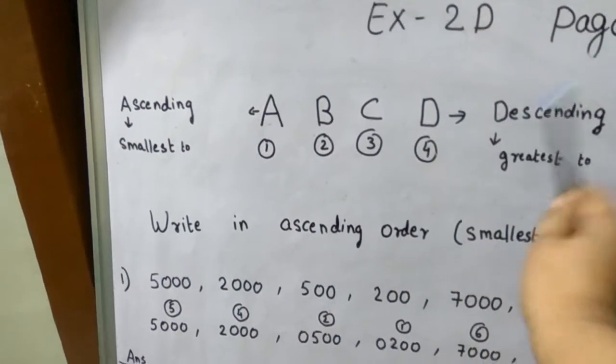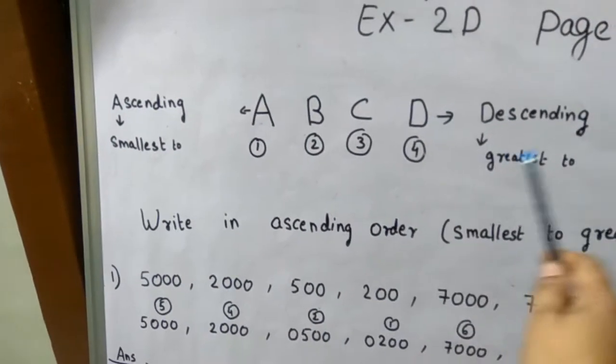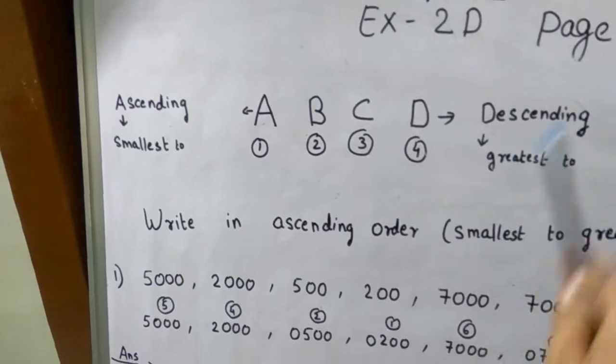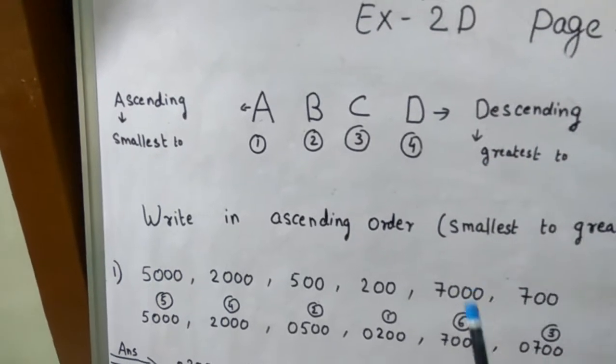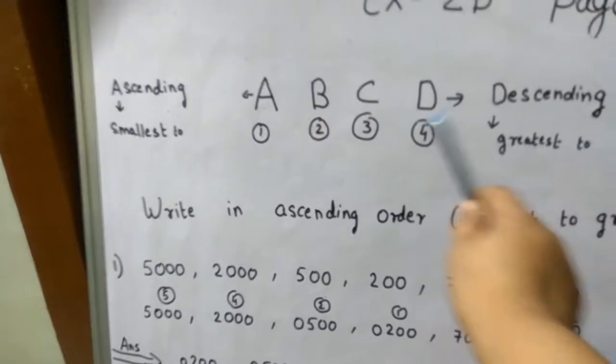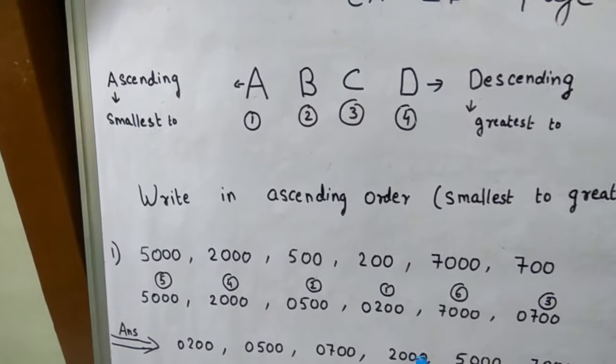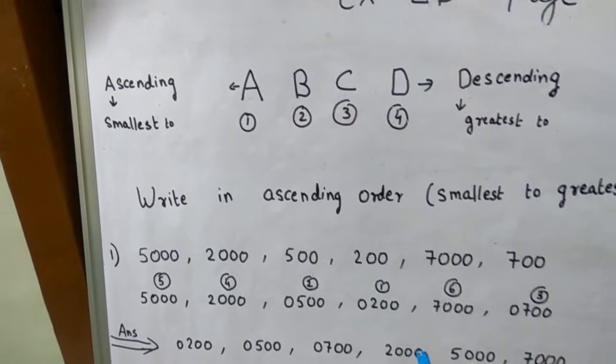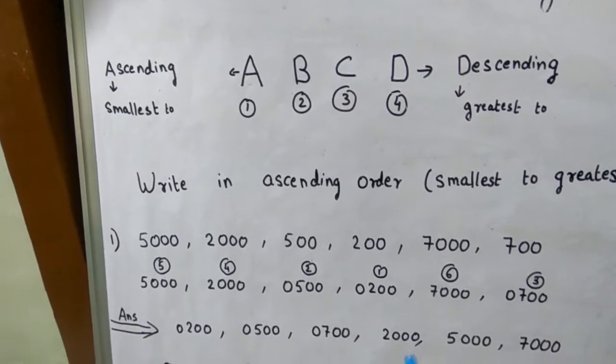So descending order is greatest to smallest, and A is smallest, meaning smallest to greatest — ascending order. You have to remember: A means ascending, smallest to greatest; D means descending, greatest to smallest. If you remember this, you can easily solve ascending and descending order problems.